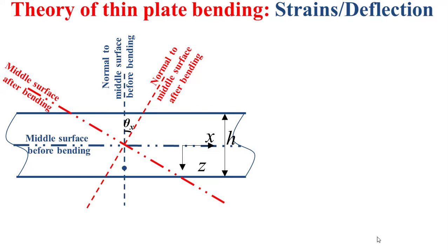This point is distant from the middle surface by a distance z, and after bending, this point will be displaced to the point depicted in red. The distance between the point depicted in blue, which is the point before bending, and the point depicted in red, which is the same point after bending, will be denoted by the letter u.